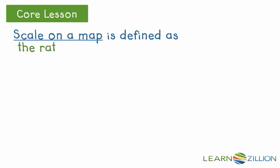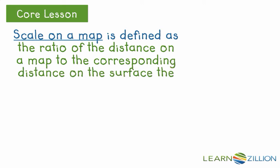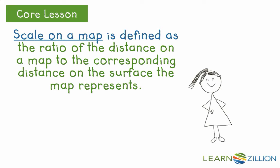A scale on a map is defined as a ratio of distance on a map to the corresponding distance on the surface the map represents. The scale helps you find the actual distance.